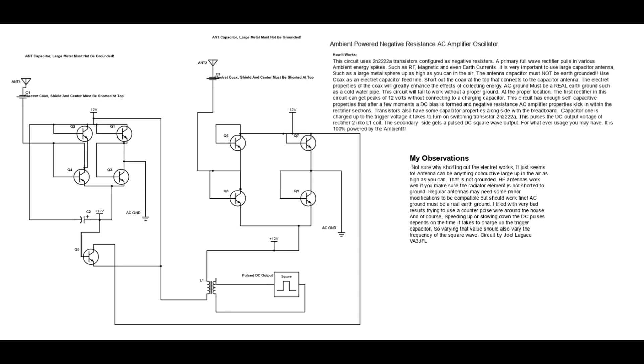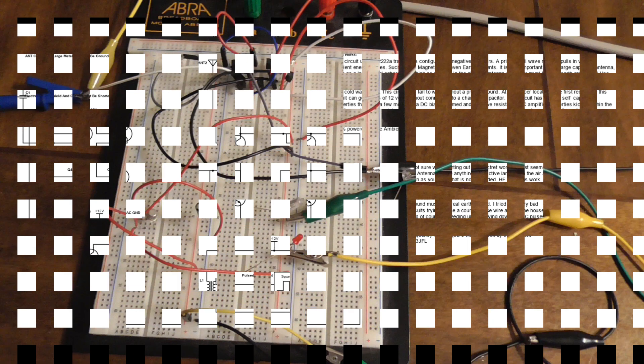Regular antennas may need some minor modifications to be compatible but should work fine. AC ground must be a real earth ground. I tried with very bad results trying to use a counterpoise wire around the house. And of course, speeding up or slowing down the DC pulses depends on the time it takes to charge up the trigger capacitor. So varying that value should also vary the frequency of the square wave generated.